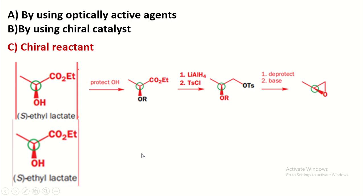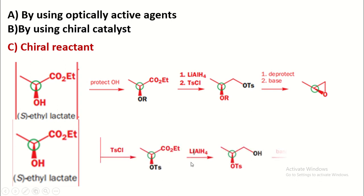In the next reaction, first the OH reacts with TsCl to form OTs, then reduction of the ester by lithium aluminum hydride gives the primary alcohol. Then the base abstracts the proton from OH to give O⁻, and this O⁻ attacks the chiral carbon from the back side to form the alpha epoxide. This is an optically active product because the reactant is optically active.